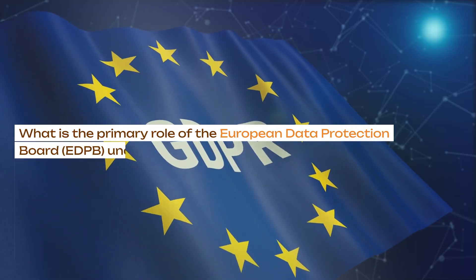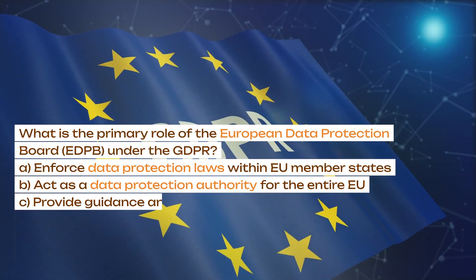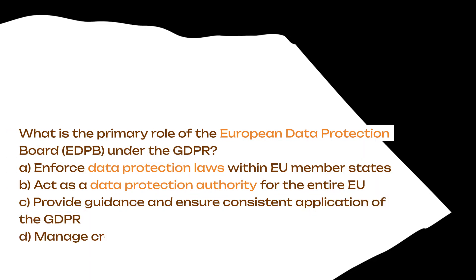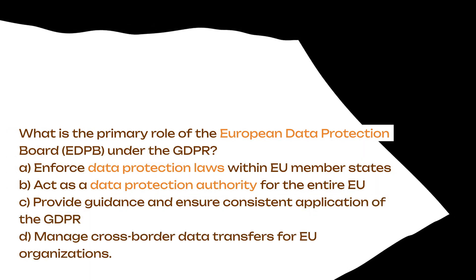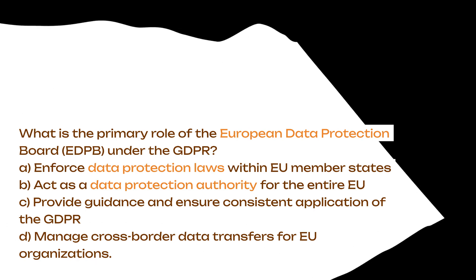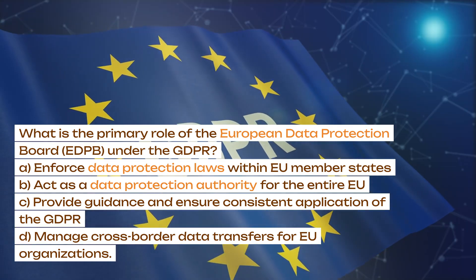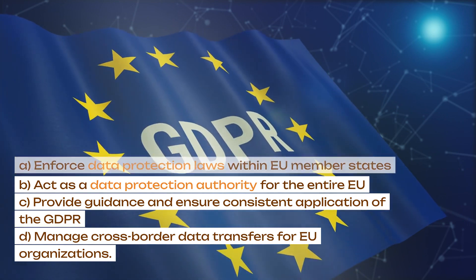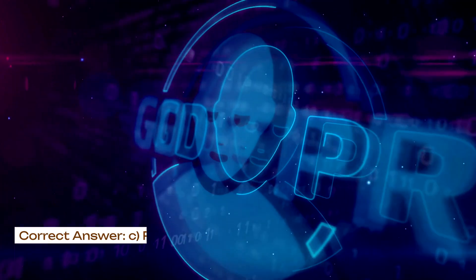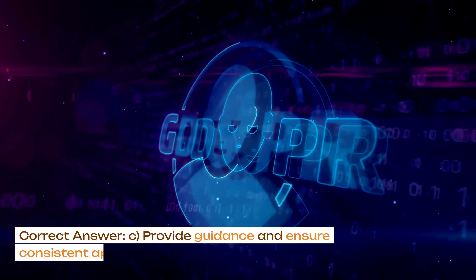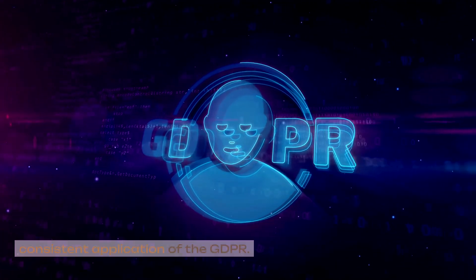What is the primary role of the European Data Protection Board (EDPB) under the GDPR? A. Enforce data protection laws within the EU member states. B. Act as a data protection authority for the entire EU. C. Provide guidance and ensure consistent application of the GDPR. D. Manage cross-border data transfers for EU organizations. Correct answer: C. Provide guidance and ensure consistent application of the GDPR.